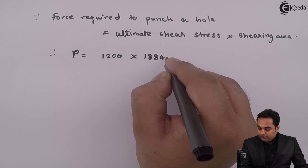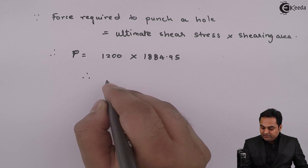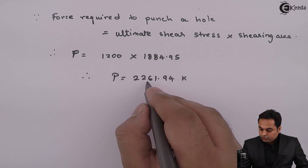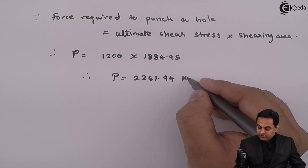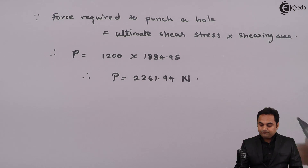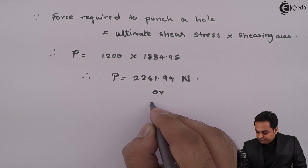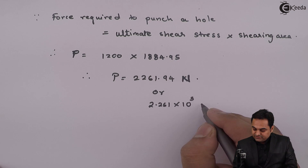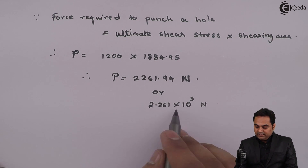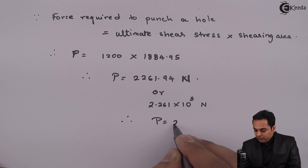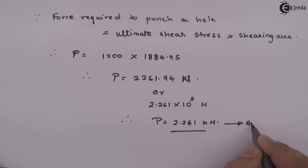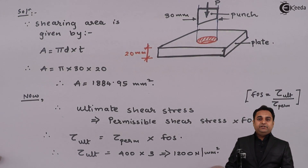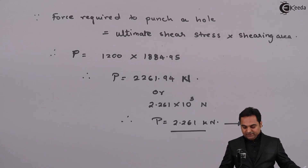Therefore, P = ultimate shear stress × shearing area = 1200 × 1884.95, giving a final answer of 2,261,940 Newton, or 2.261 × 10³ Newton. Dividing by 1000, P = 2.261 kilonewton. This is the force required at the punch to shear a hole of 30 mm diameter in a plate of 20 mm thickness. With this, we complete the problem.